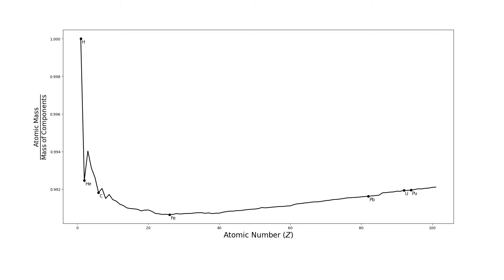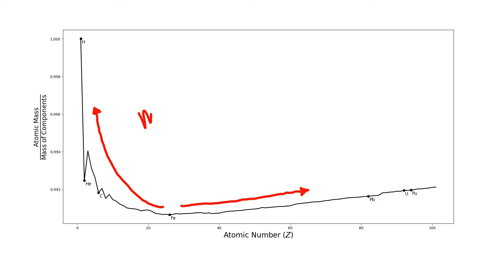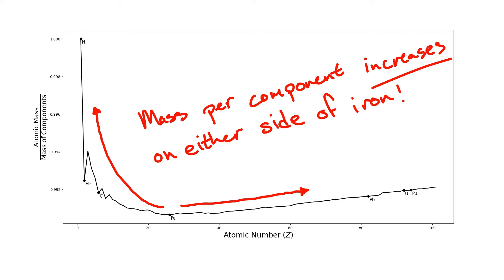First is that the ratio is universally less than one. In other words, the atoms are always lighter than the sum of their components. This is just a statement that the protons, neutrons, and electrons making up the atoms prefer to be in these bound states if they get the chance. The other thing to notice is that this ratio isn't constant. The atoms get heavier per component on either side of iron. So what does this have to do with mass-energy equivalence?